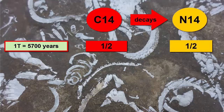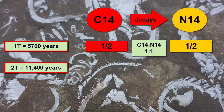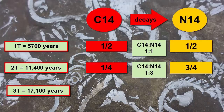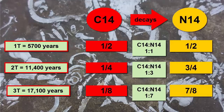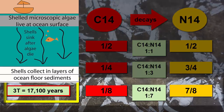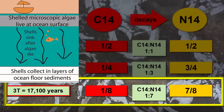After one half-life, assuming there was no nitrogen-14 to begin with in a rock sample, the ratio of the two should be 1 to 1 — equal. After two half-lives, the half that remained of parent after the first half-life is now halved again; half of the half is a quarter. The remaining three quarters is daughter, and the ratio of parent to daughter is 1 to 3. Another half-life, and we halve the quarter — there's now one eighth parent and seven eighths daughter, and the ratio is 1 to 7. At this point, three half-lives have passed, and the time is 5,700 times 3, or 17,100 years. A shell that was buried 17,100 years ago would have a carbon-14 to nitrogen-14 ratio of 1 to 7.